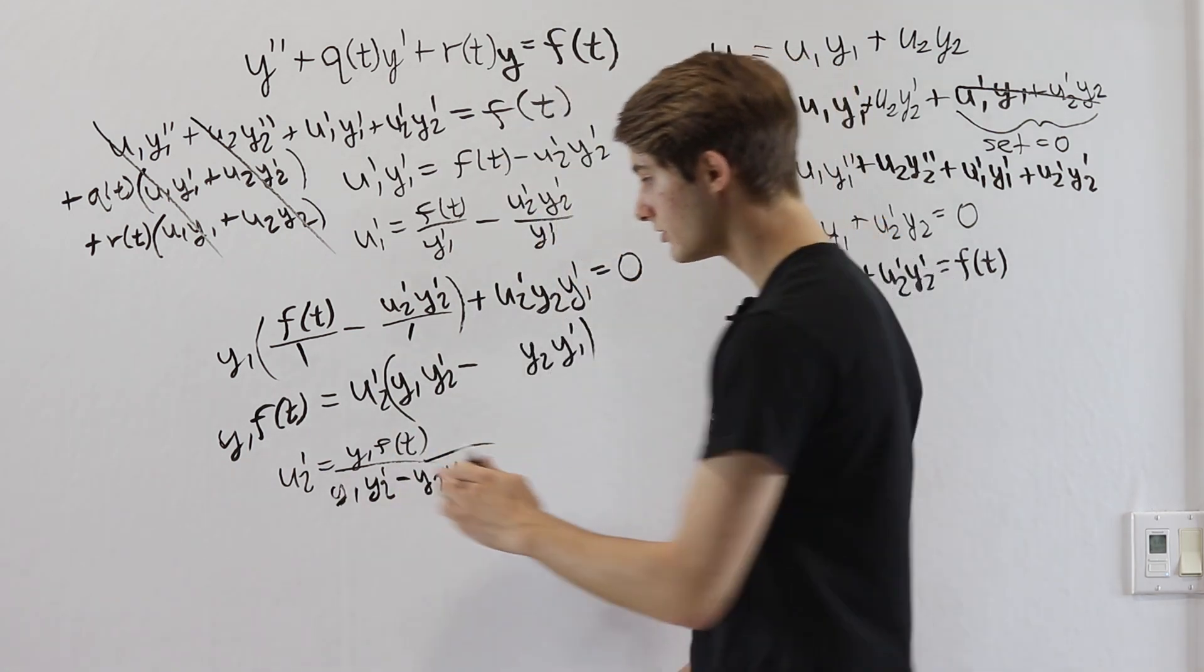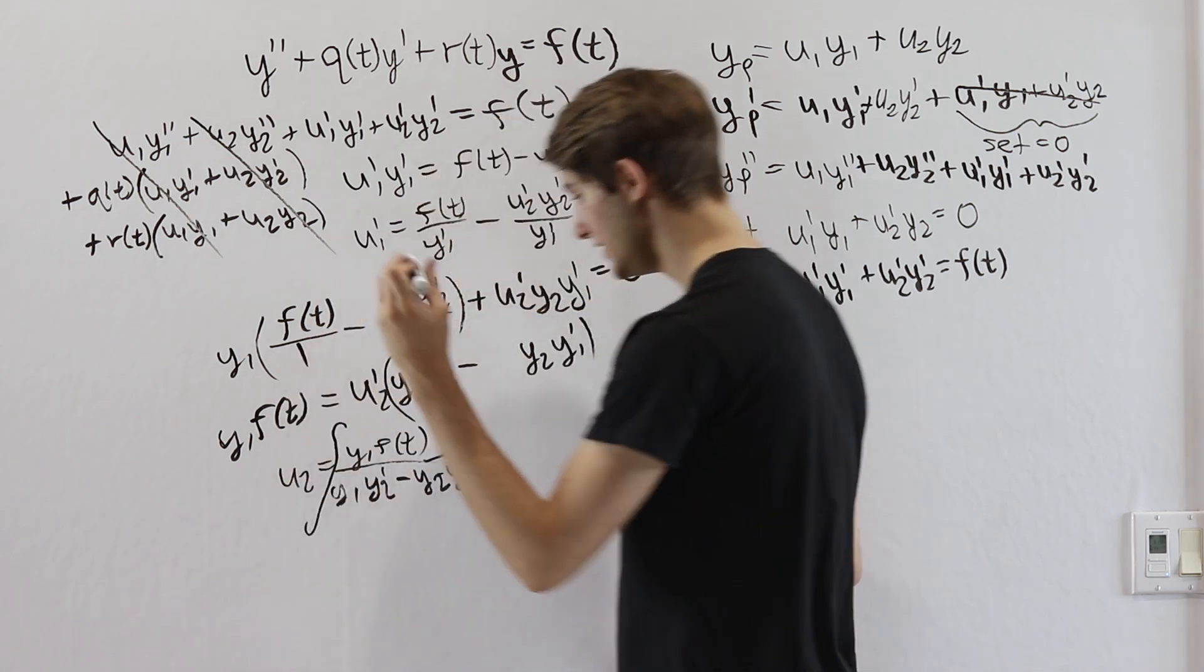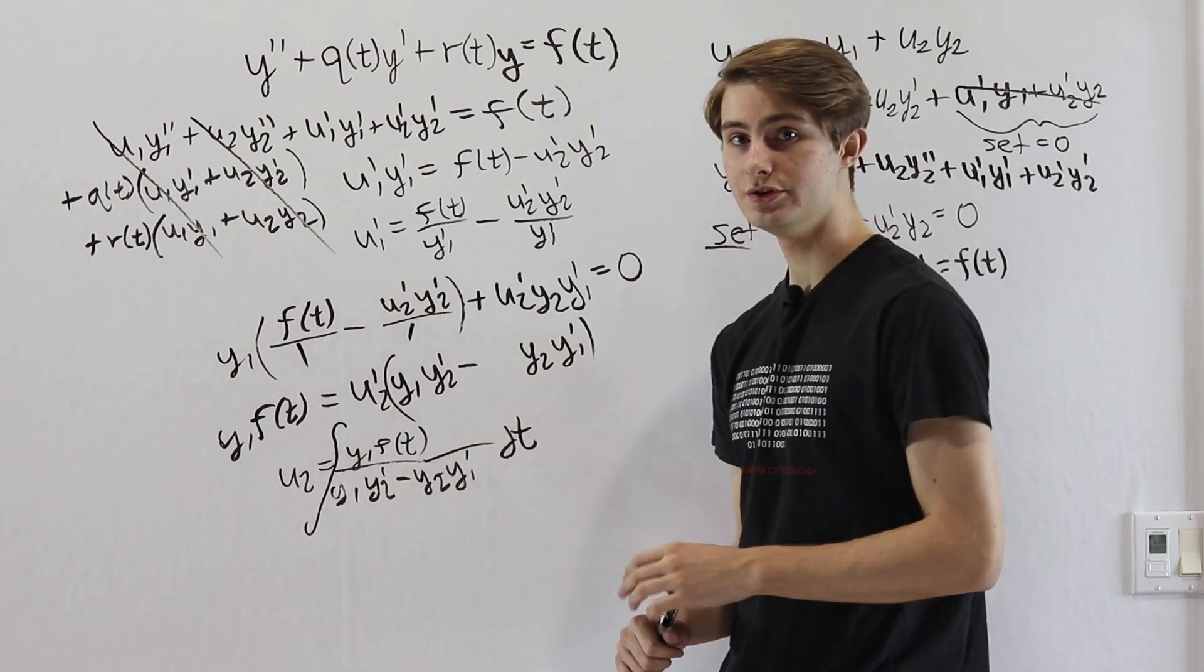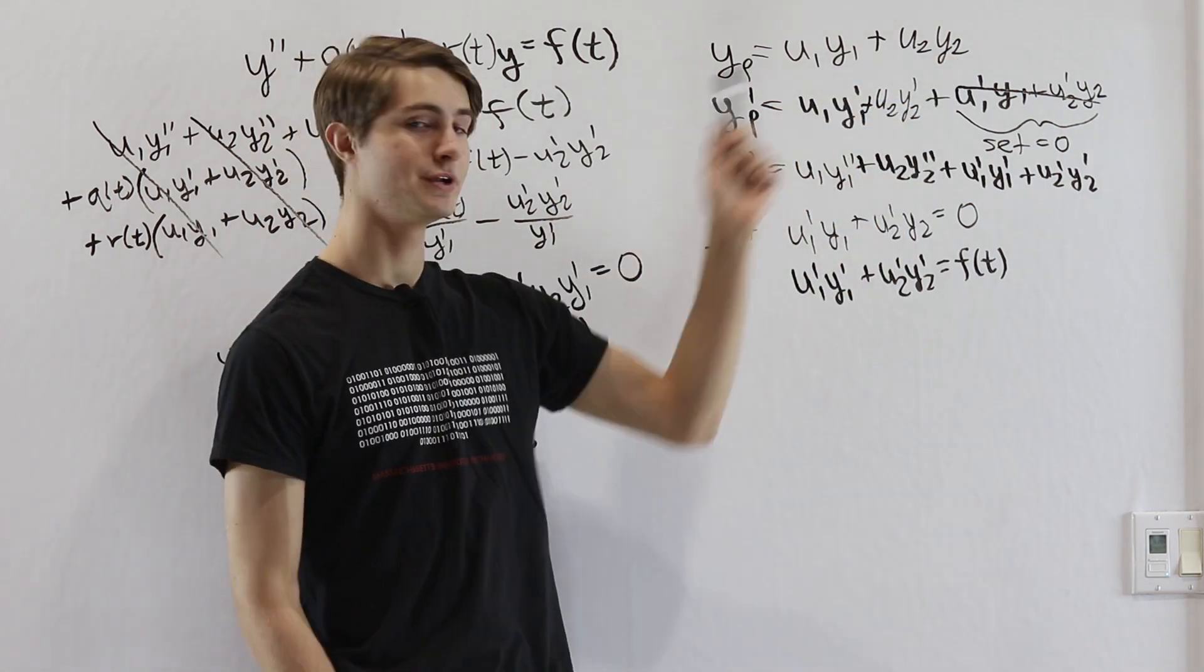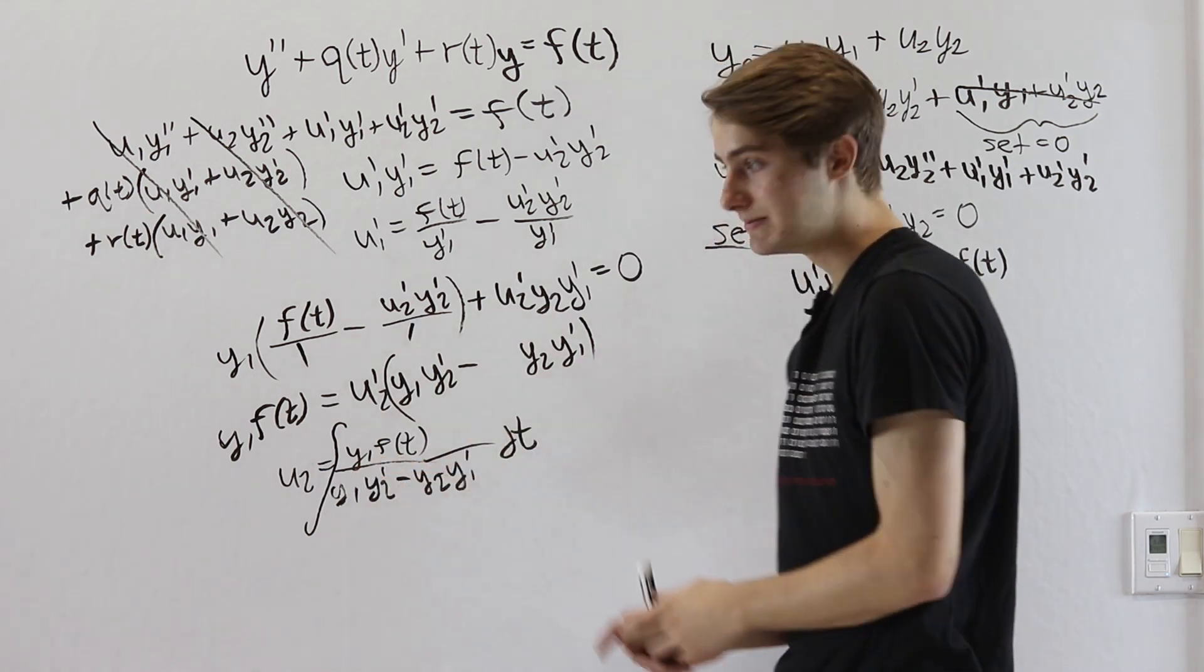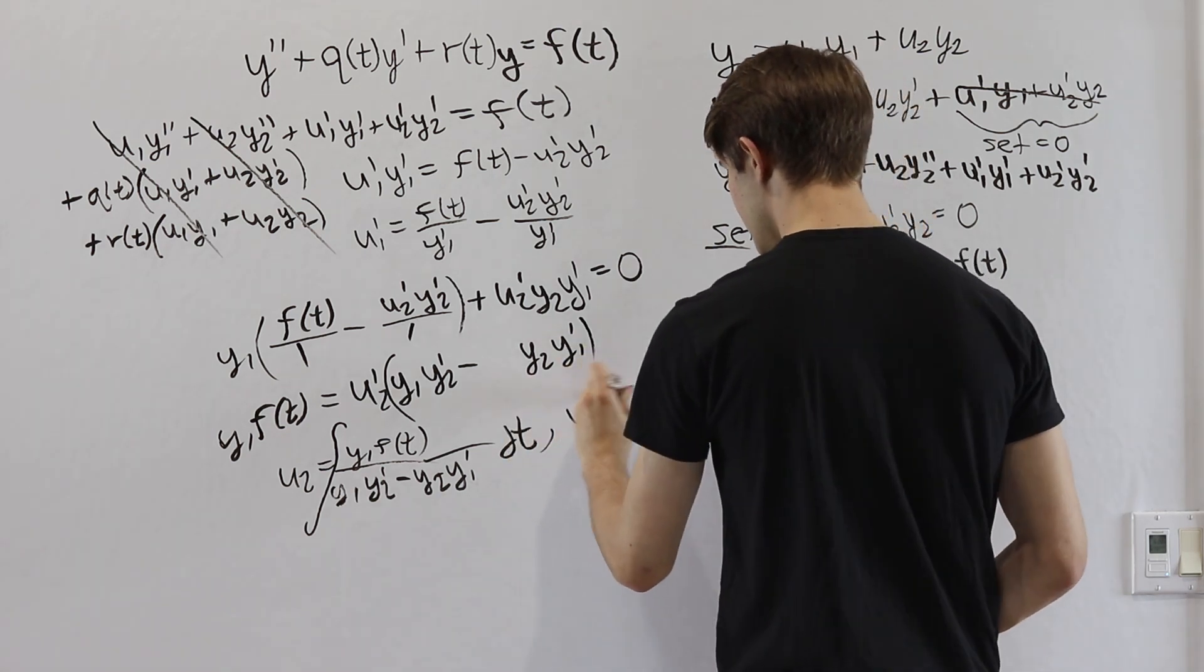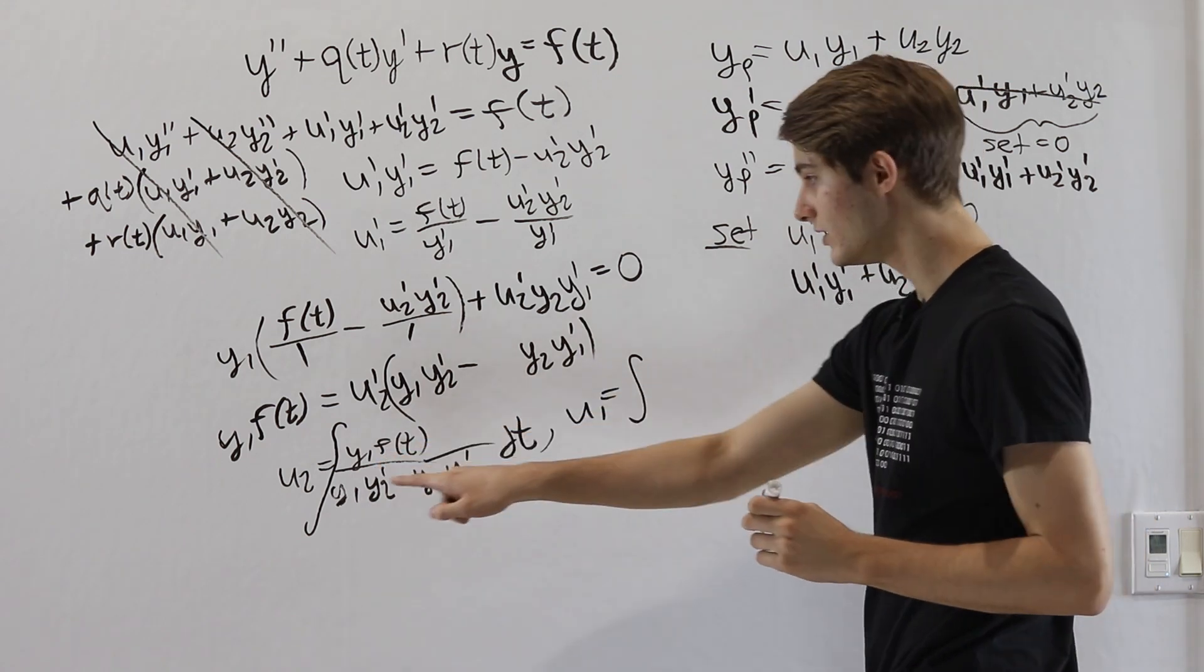And notice if this is u2 prime, all we have to do to solve for u2 is take the integral of that with respect to t. So that is the solution for u2. And then we can just go back and multiply it by y2 to get the first component of our solution.